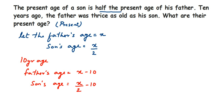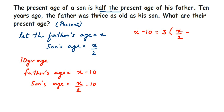The condition given is that the father was thrice as old as his son 10 years ago. So father's age 10 years ago equals three times the son's age 10 years ago. That gives us the equation: x − 10 = 3 × (x/2 − 10).